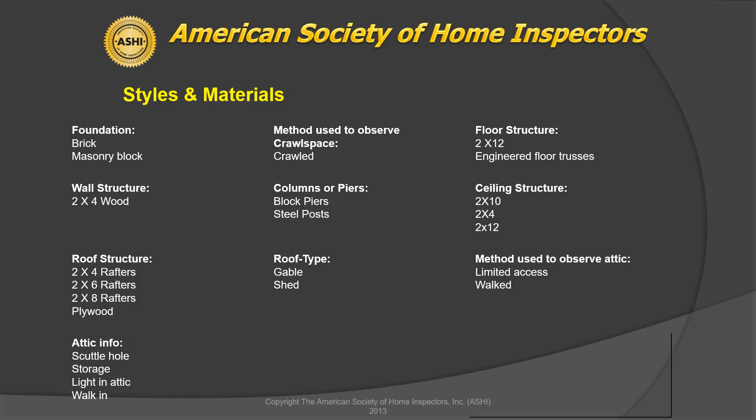Let's talk about things that need to be included in the home inspection report — something we call styles and materials. Basically, this is me going through the home and explaining what everything's made of. We'll start with the foundation. Oftentimes when we have a crawl space, it will be brick and block. A lot of times it's block; the older ones will be brick.